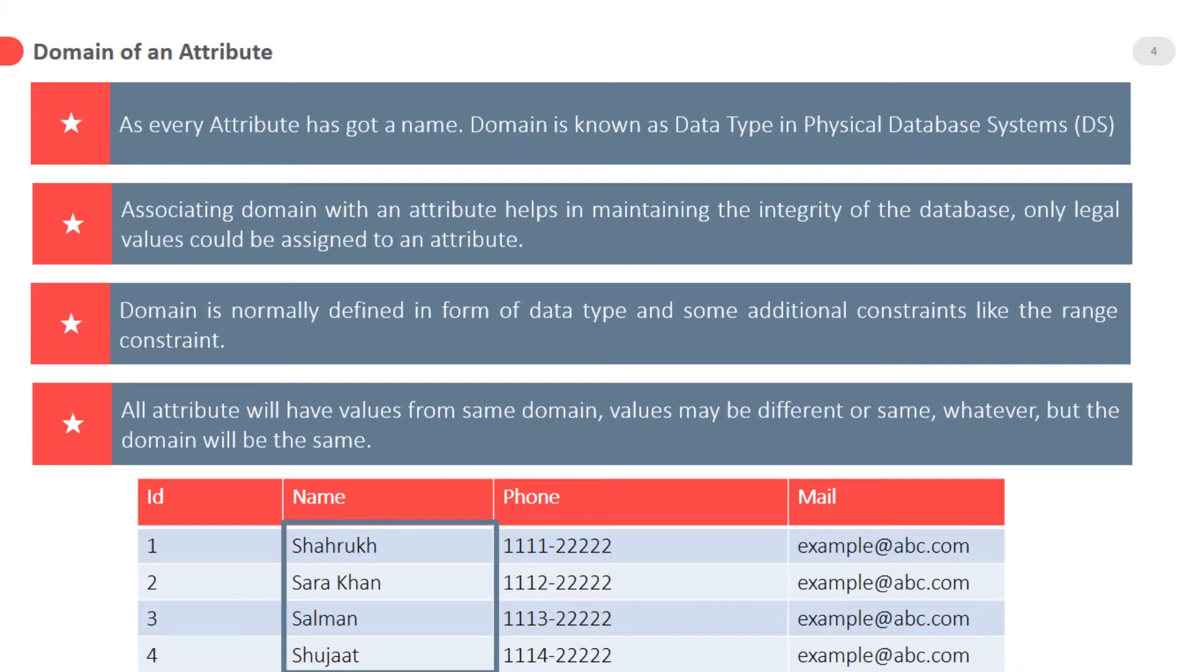Only legal values could be assigned to an attribute. Domain is normally defined in form of data type and some additional constraints like range constraints. All attributes will have values from the same domain.